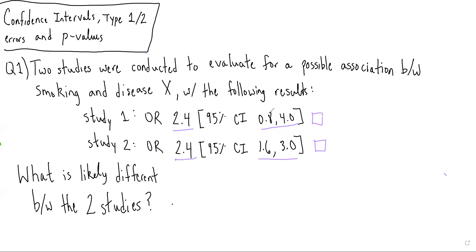And therefore, study one, because it extends from 0.8 to 4.0, crosses 1 and is not statistically significant. Whereas study two goes from 1.6 to 3.0, does not cross 1, and therefore is statistically significant.